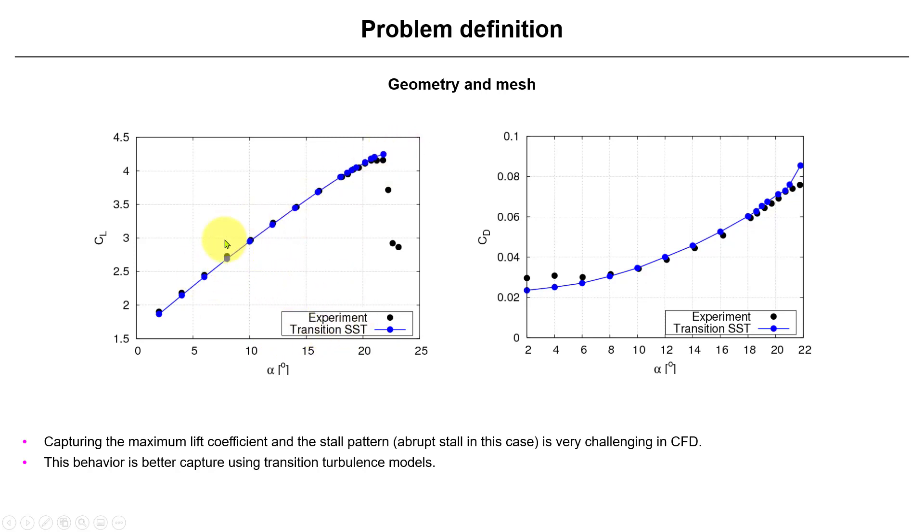I want to mention that in CFD, after all these years that we have been doing CFD for more than several years, capturing this is very difficult, in particular the maximum lift, but also capturing the stall behavior. See that this is an abrupt stall pattern here. To capture that was very difficult, usually you need to use this kind of transition model.